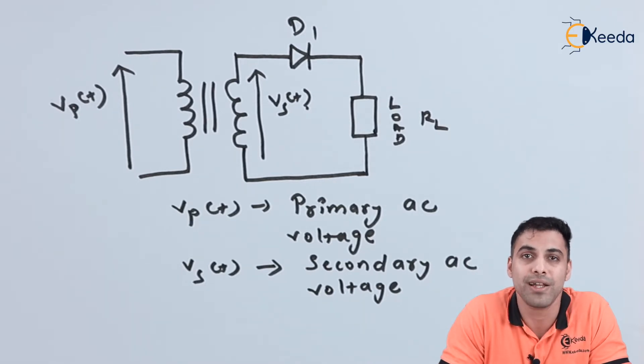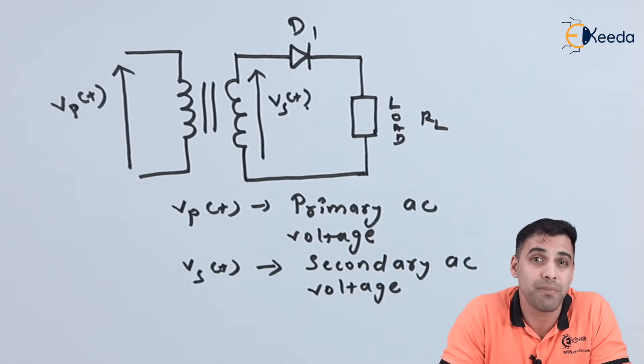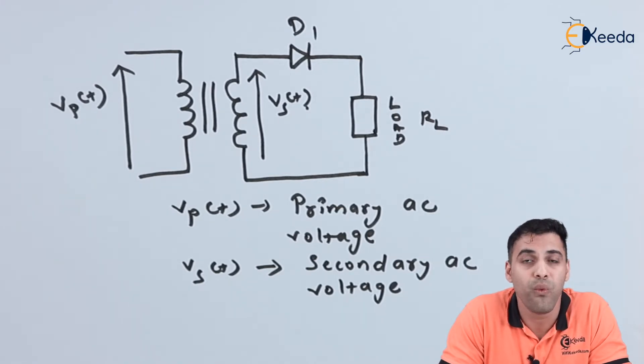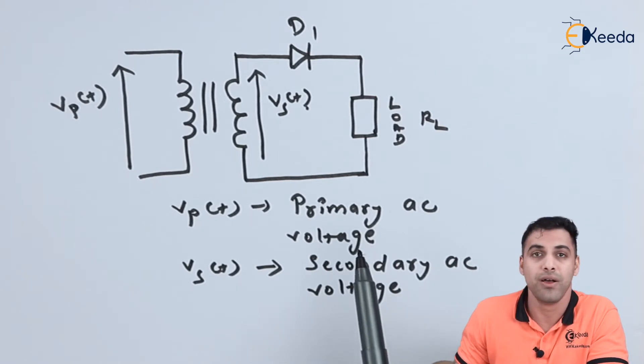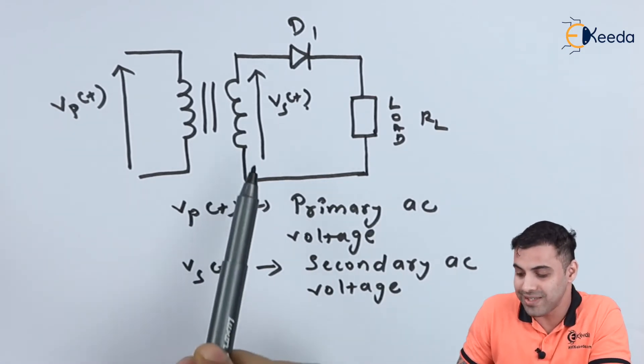Obviously in this circuit, the diode D1 is going to block all the negative cycles of the sine wave, so we will only be getting the positive pulses of the sine wave which ultimately becomes a pulsating DC voltage.